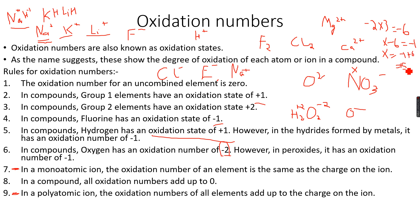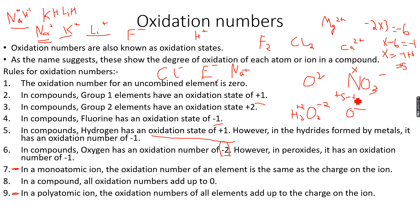Remember, the sign is very important when talking about oxidation numbers. The oxidation number of nitrogen in this polyatomic ion must be plus 5, because plus 5 minus 6 equals minus 1, which is the charge on the polyatomic ion.